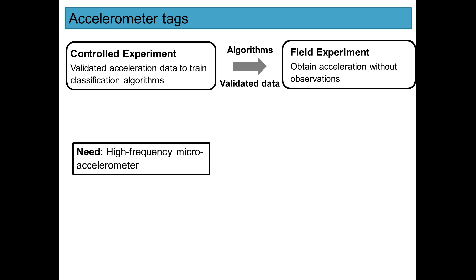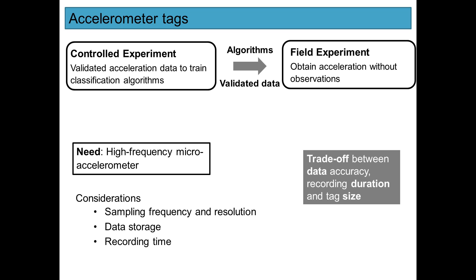In designing such technology, there are a variety of considerations: the sampling frequency and resolution of the sensor, data storage, and recording time. There is typically a trade-off between data accuracy, recording duration, and tag size. By increasing data accuracy, the recording duration is often decreased and the tag size is increased, because it directly relates to battery power.